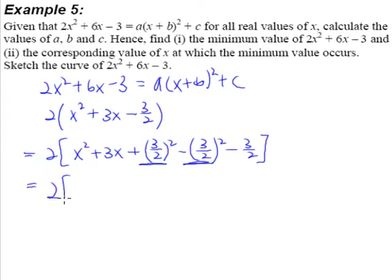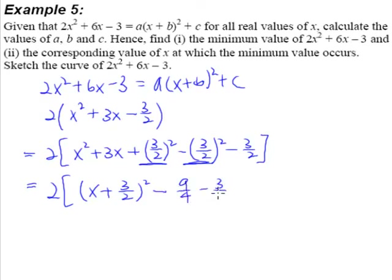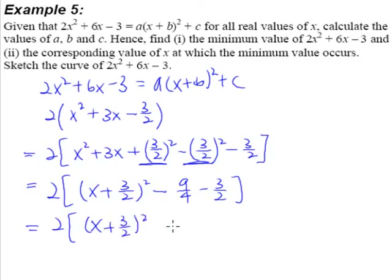What we have done is changed the first three terms into a perfect square. These three terms can now be expressed as a perfect square. As for what is left behind, we just have to work it out. You can use your calculator to help: negative 9 over 4 minus 3 over 2 gives us negative 15 over 4.